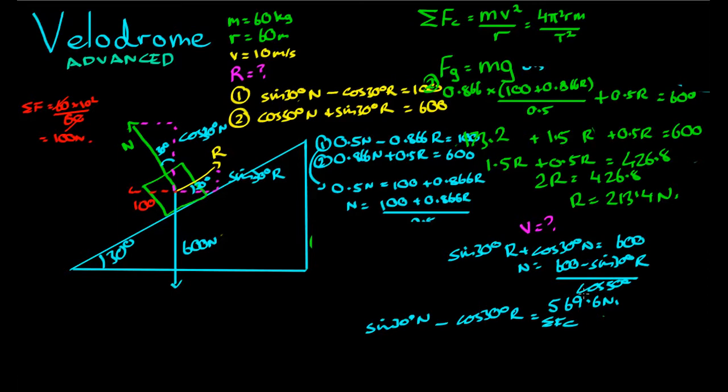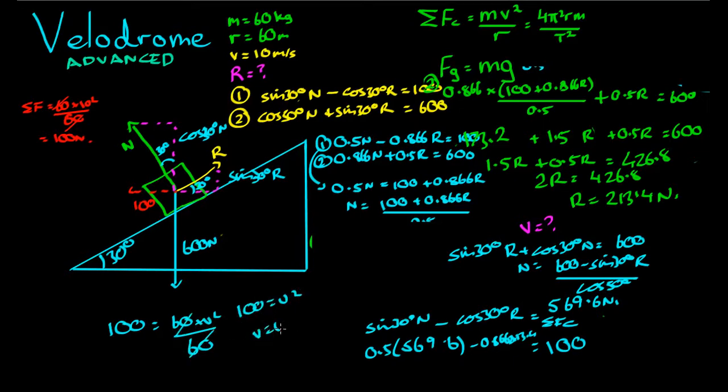And then we had sine 30 degrees N take away cos 30 degrees R equals the net centripetal force towards the middle. So 0.5 times N, which was 569, take away 0.866 times our R value, 213.4, equals, I'm very happy with this, 100. And that is the net centripetal force we had here. So to cap it off, we had 100 equals MV squared on R, which equals 60 times V squared on 60. Those cancel down. 100 equals V squared. V equals 10 meters per second. So I have great faith in my answer there since I used it to work backwards to find the original given speed.